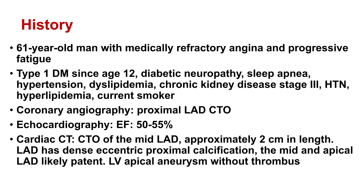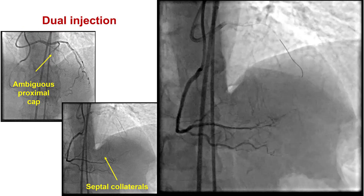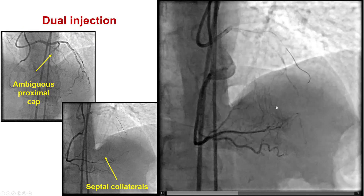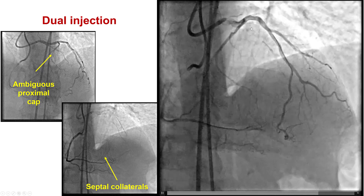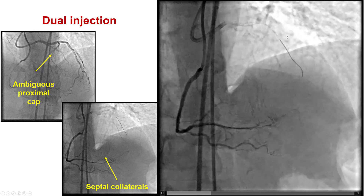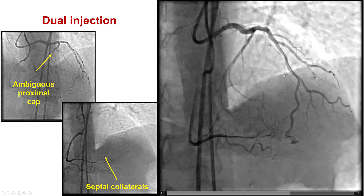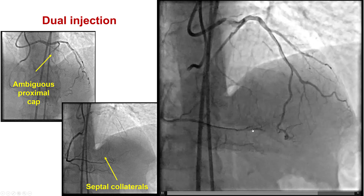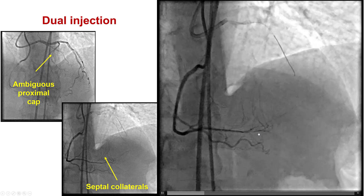The patient had diabetes mellitus for many years and was referred for PCI of an LAD CTO. The LAD had an occlusion with an ambiguous proximal cap distal to the takeoff of a large diagonal vessel. The distal vessel was diffusely diseased and was filling via septal collaterals from the right coronary artery.